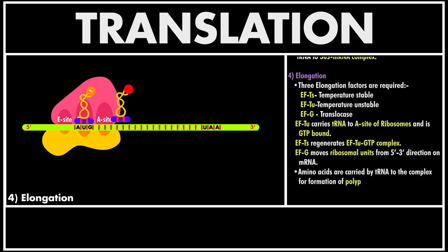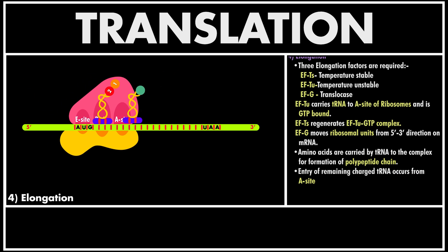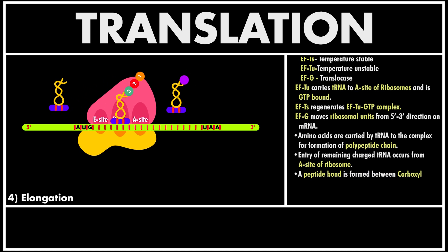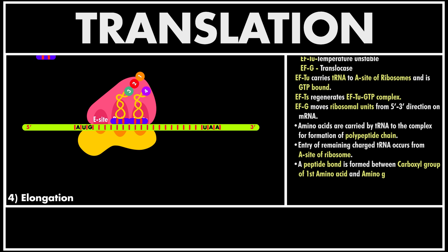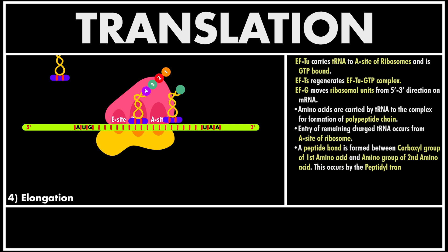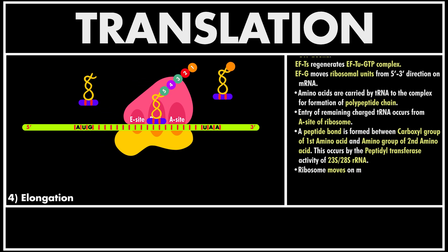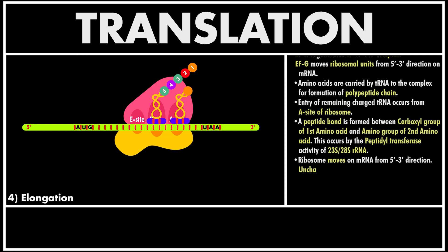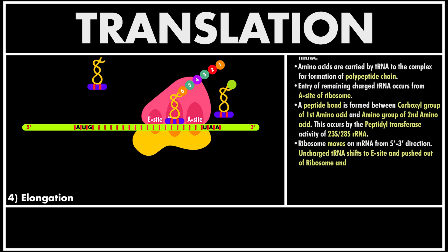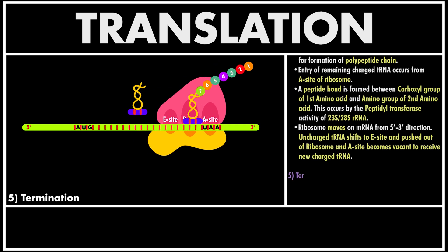This peptide bond is formed between the carboxyl group of the first amino acid and the amino group of the second amino acid. The ribosome complex now moves from 5' to 3' direction on mRNA to the next codon, and as a result the first tRNA shifts from the P site to the E site and ultimately gets removed from the complex. The second tRNA now shifts to the P site and the A site becomes vacant to receive new charged tRNA. This movement is performed by the translocase activity of EF-G and energy is provided by hydrolysis of GTP. The process continues and amino acids are added to the polypeptide chain; addition of each amino acid requires consumption of 2 GTP.